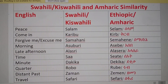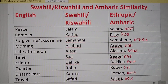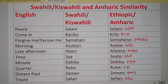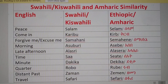Hi guys, today my video is about the similarity between Swahili and Amharic. Swahili, also known as Kiswahili, is spoken in East Africa — Kenya, Tanzania, Uganda, Congo, Rwanda — by over a hundred million people. Amharic is a Semitic language spoken in Ethiopia. Swahili is a Bantu language influenced by Arabic, while Amharic is a Semitic language influenced by Cushitic languages.